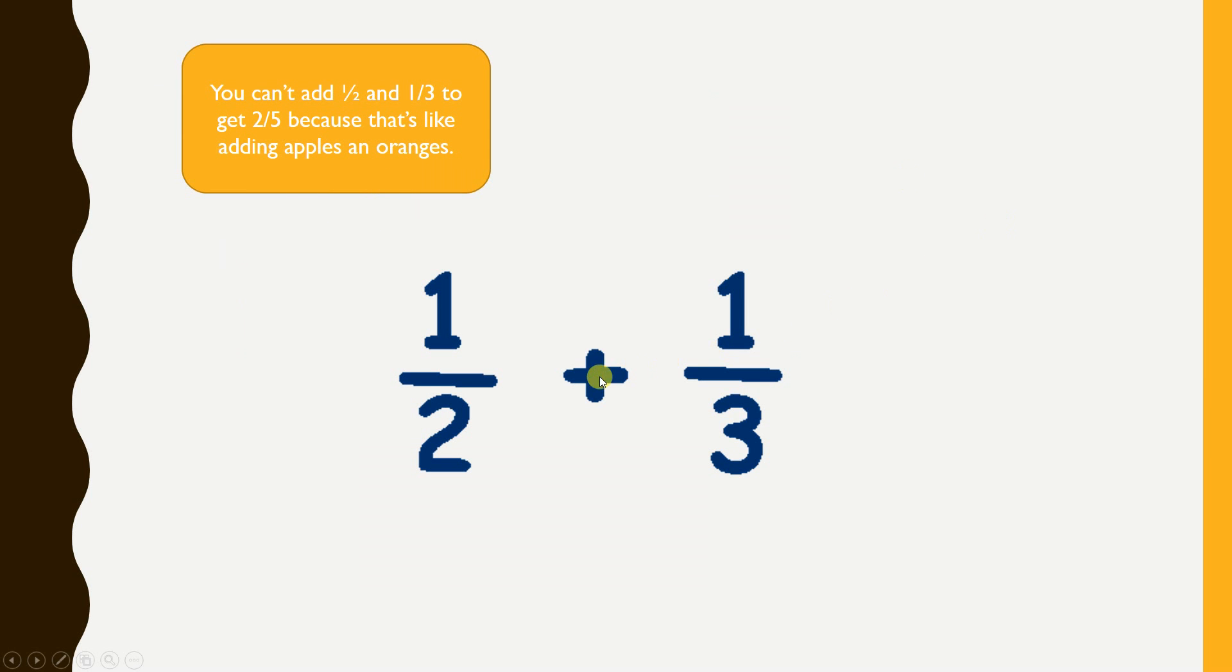Now, the issue with adding these two things together, the reason you can't just add them, like one plus one is two and two plus three is five, is because they're not the same thing. It's kind of like adding apples and oranges. Like, if I gave you, I don't know, three pennies and five nickels, you wouldn't say that's eight penny nickels, would you? Yeah, it doesn't quite work like that.